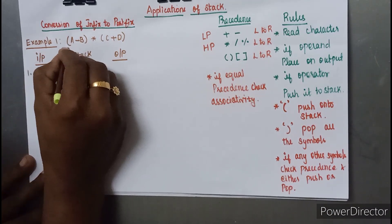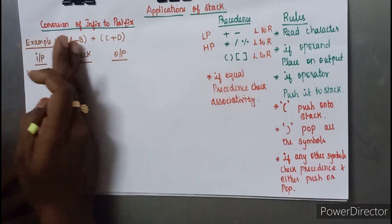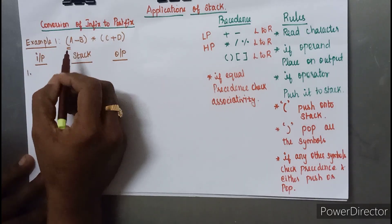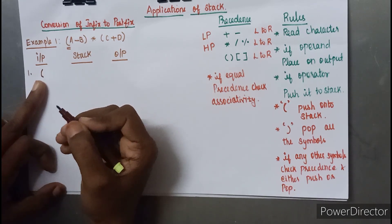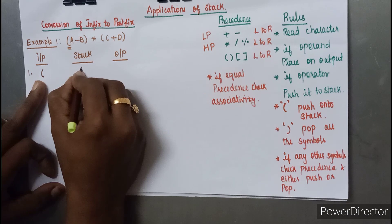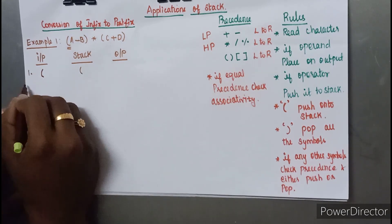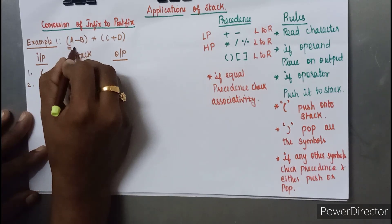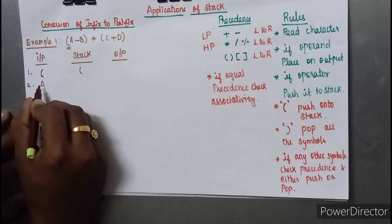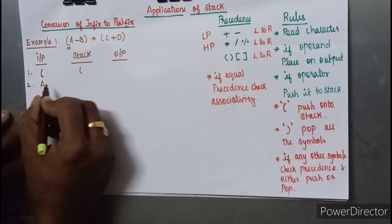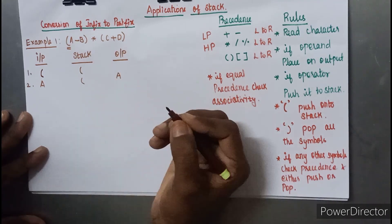Reading the expression from left to right, the first character encountered is a left parenthesis. Since it has the highest precedence it should be pushed onto the stack and there will be nothing in the output. The next character is 'a', which is an operand, so the stack remains the same and 'a' is placed on the output.